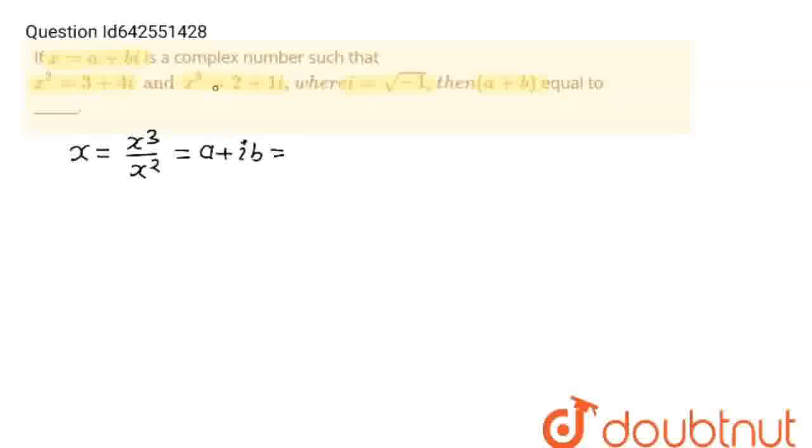And a plus iota b, what is x cube? This is 2 plus iota, 1 iota means iota upon 3 plus 4 iota. And now I'm going to multiply this with conjugate of complex number in base, 3 minus iota 4 upon 3 minus iota 4.